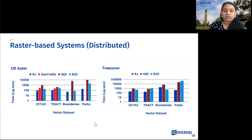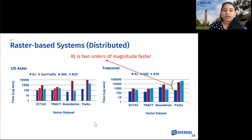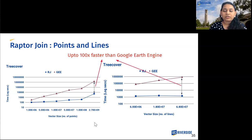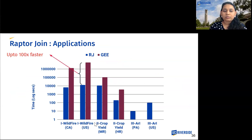Next, we perform an experiment with distributed raster-based systems. We observe that RaptorJoin is two orders of magnitude faster than the baselines of Google Earth Engine, GeoTrellis, and Raptor Zonal Statistics. We also conduct experiments for points and lines, where RaptorJoin is up to hundreds of times faster than Google Earth Engine. Finally, we run an experiment for the applications discussed earlier against Google Earth Engine and find RaptorJoin to be hundreds of times faster.